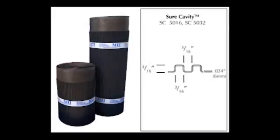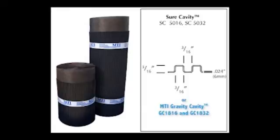For the Drainage Plane, we are using Sure Cavity from MTI. Sure Cavity comes in two thicknesses: 3/16-inch and 10-millimeter. 10-millimeter drainage planes are code in Canada. In this video, we are using the 3/16-inch Sure Cavity.